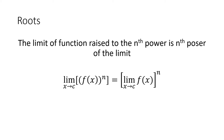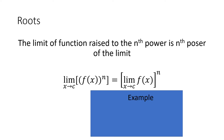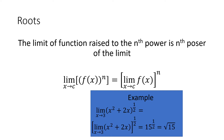Finally, if I raise a function to the nth power, I can take the limit of that function and then raise that limit to the nth power. So if I have (x² + 2x) raised to the ½ power, I take the limit as x approaches 3 of x² + 2x, which gives 9 + 6 = 15, and then raise it to the ½, giving √15.